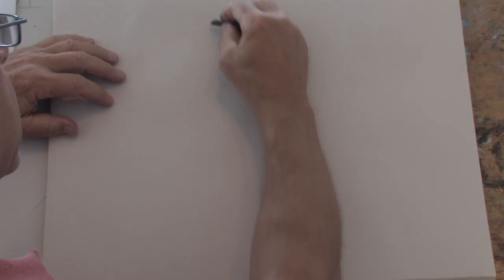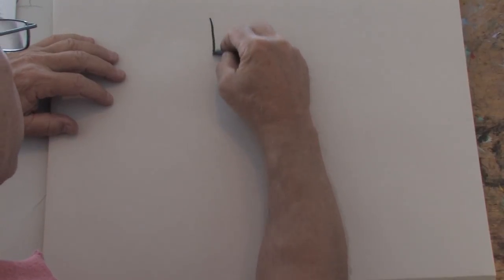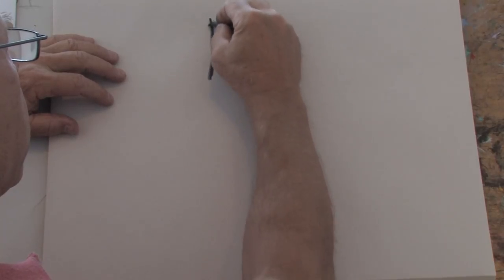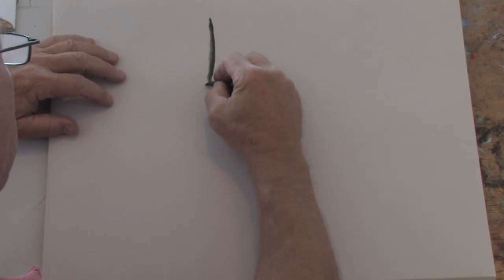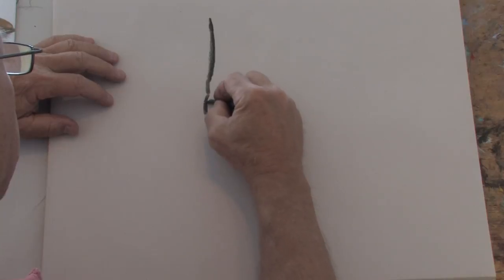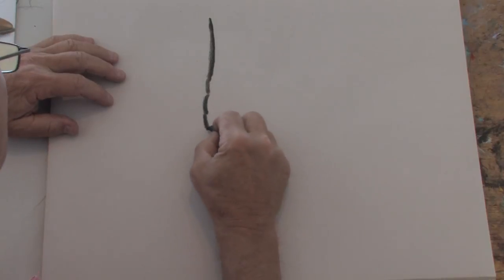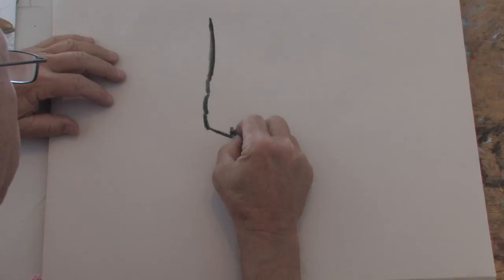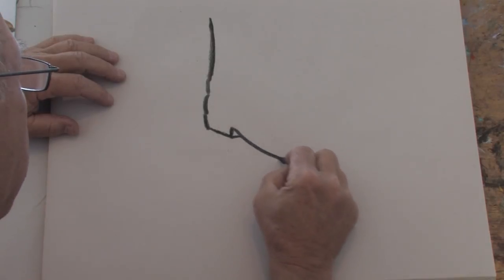Now I'm going to start off with drawing the top part where the lower part of the leg would go in. And then here would be the heel and then the heel and then bottom over here.